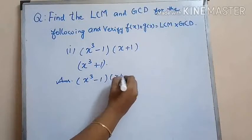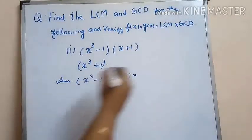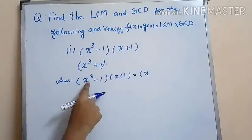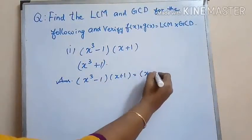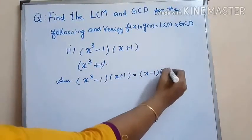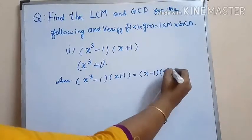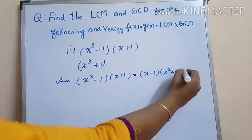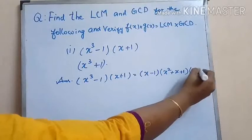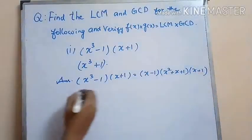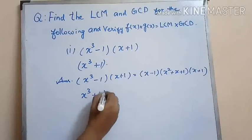Now let us factorize each of the polynomials. x cubed minus 1 can be expanded as x minus 1 times x squared plus x plus 1, and we have x plus 1 in f(x).